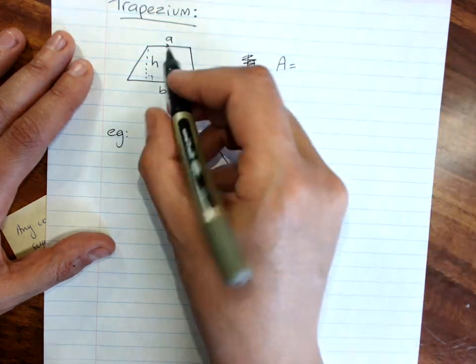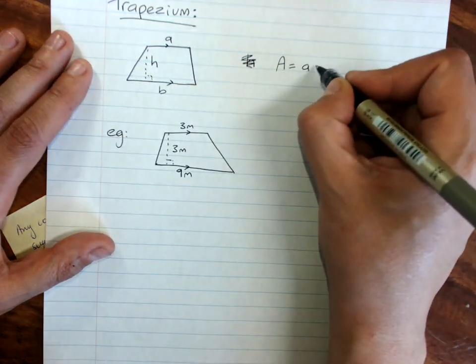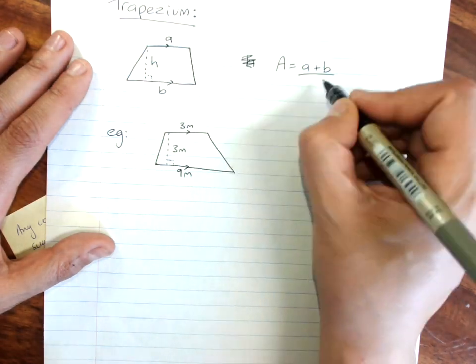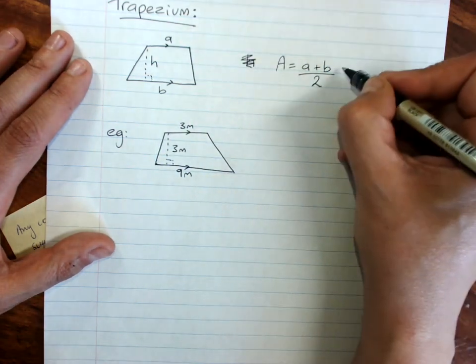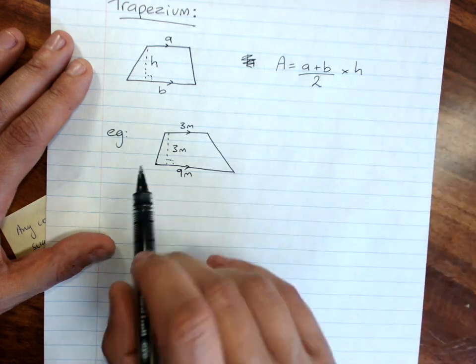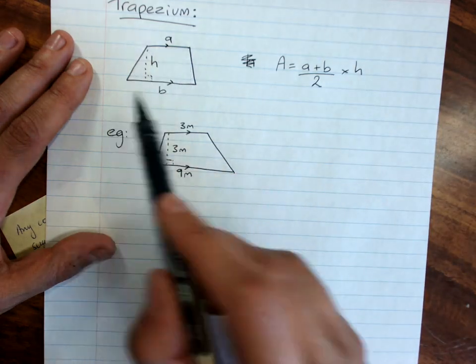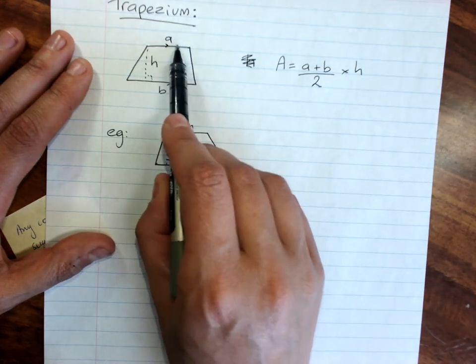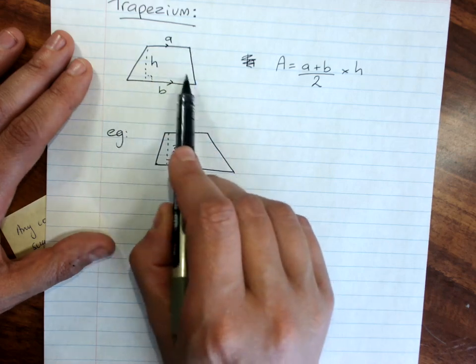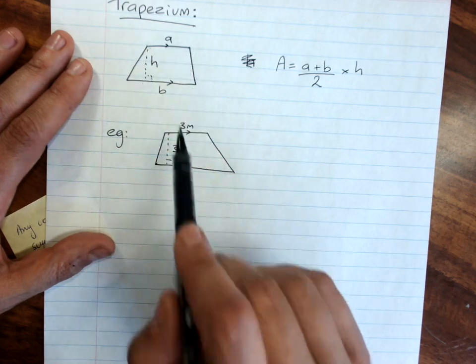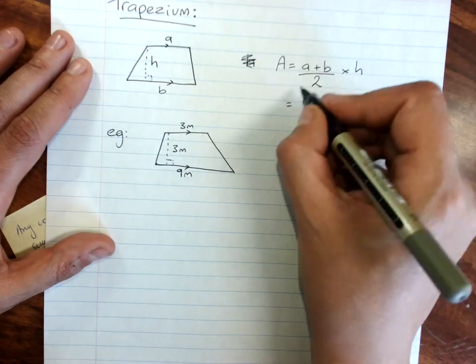area equals a plus b—the two parallel sides added together—divided by 2, times height. Because we always take the dimensions that are at right angles to each other. So we are averaging this dimension. This is our formula.